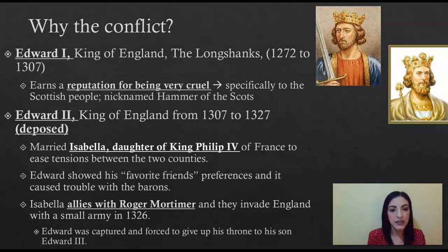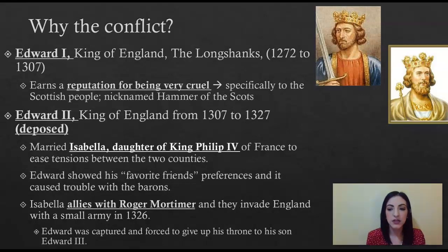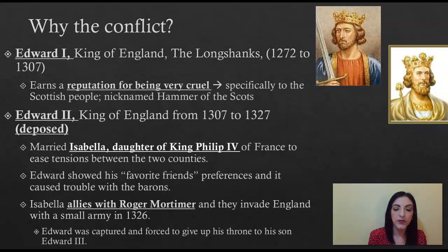Edward I did have a son, Edward II, who was King of England from 1307 until 1327. Most historians believe Edward II probably did not want to be king. He was much more gentle-natured and didn't really concern himself with matters of state — he would have much rather been a poet or musician. When he was young, he was married off to a princess, Isabella, the daughter of King Philip IV of France. This was done because England and France had basically been at war almost since the beginning, and an alliance through marriage would alleviate tensions.